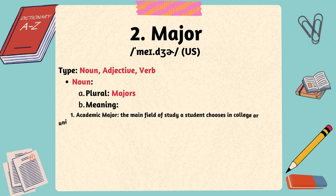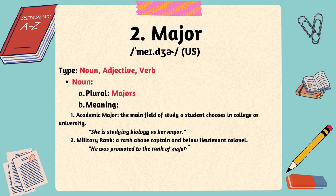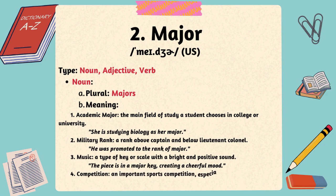Here are some common meanings of major as a noun. One, academic major: the main field of study a student chooses in college or university. She is studying biology as her major. Two, military rank: a rank above captain and below lieutenant colonel. He was promoted to the rank of major. Three, music: a type of key or scale with a bright and positive sound. The piece is in a major key, creating a cheerful mood.